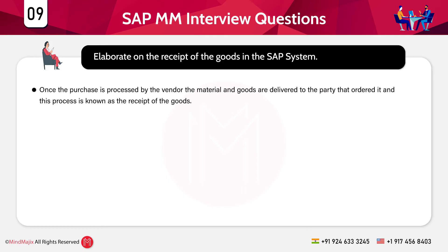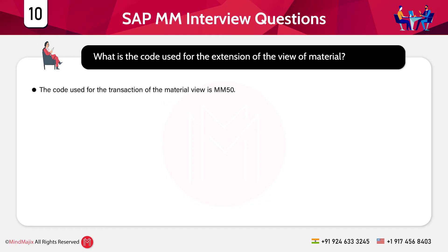The next question is: elaborate on the receipt of goods in the SAP system. Once the purchase is processed by the vendor, materials and goods are delivered to the ordering party — this is known as the receipt of goods. During delivery, the receiving party checks the quality and condition of the materials and goods, and after verification, the receipt is finally posted.